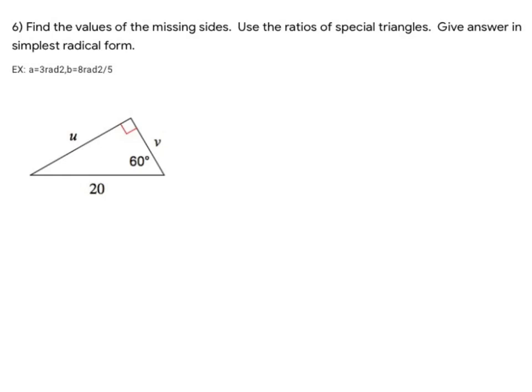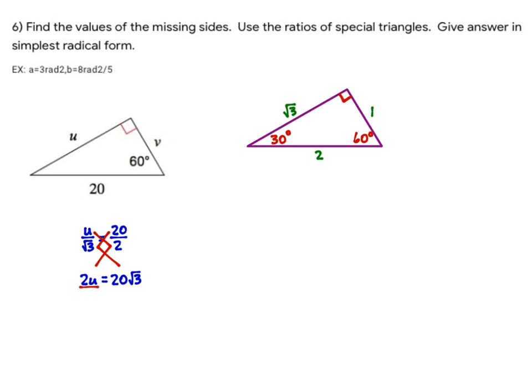For number 6, again a 30-60-90 triangle. The 1 is across from the 30, the 2 is the hypotenuse across from the 90, and √3 is across from the 60. Setting up proportions: U over √3 equals 20 over 2. Cross-multiplying gives 2U equals 20√3, so U equals 10√3. For V, V over 1 equals 20 over 2, which simplifies directly to V equals 10. You don't have to strictly cross-multiply if you can reduce directly — cross-multiplication is just a reliable tool that always works.